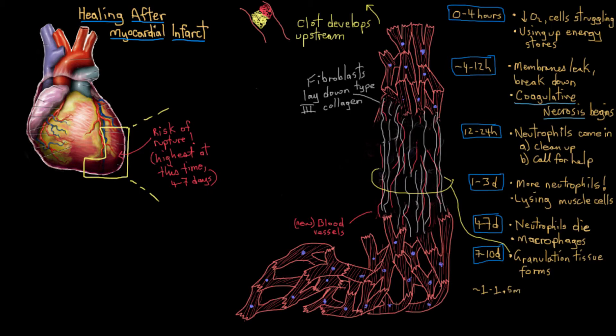What's next? Well, after about a month, month and a half, the type three collagen in the granulation tissue will be completely replaced by a way stronger type of collagen called type one collagen.